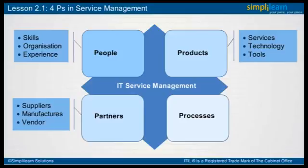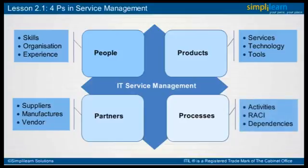The fourth and final perspective is the process perspective. This relates to the end-to-end delivery of service based on process flows. Quality IT service management ensures that all four perspectives are taken into account as part of the continual service improvement of the IT organization — and it is the same when designing new or modified services, as these four perspectives remain constant.